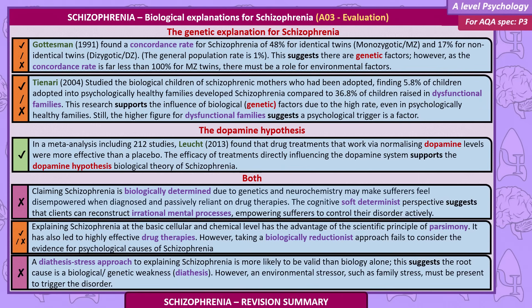Claiming schizophrenia is biologically determined due to genetics and neurochemistry may make sufferers feel disempowered and passively reliant on drug therapies. The cognitive soft determinist perspective suggests that clients can reconstruct irrational mental processes, empowering sufferers to actively control their disorder. Explaining schizophrenia at the cellular and chemical level has the advantage of scientific parsimony and has led to effective drug therapies, however a biologically reductionist approach fails to consider the evidence for psychological causes.